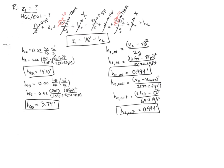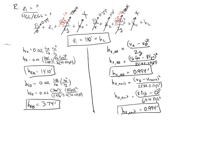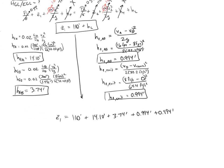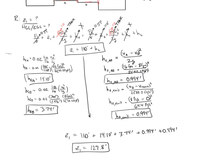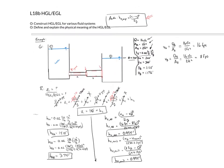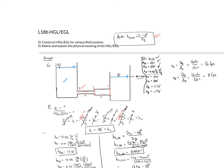Going back to the energy equation: z1 = 110 + 14.10 + 3.74 + 0.994 + 0.994 + entrance loss (neglected) = 129.8 feet. Now let's draw the HGL and EGL.